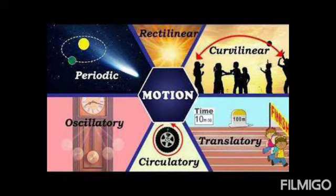The other type of translatory motion is curvilinear motion. If a body moves along a curved path, its motion is called curvilinear. As you can see in the slide, a curve is shown with an arrow. If you move along a curved wall or path, we call it curvilinear motion.